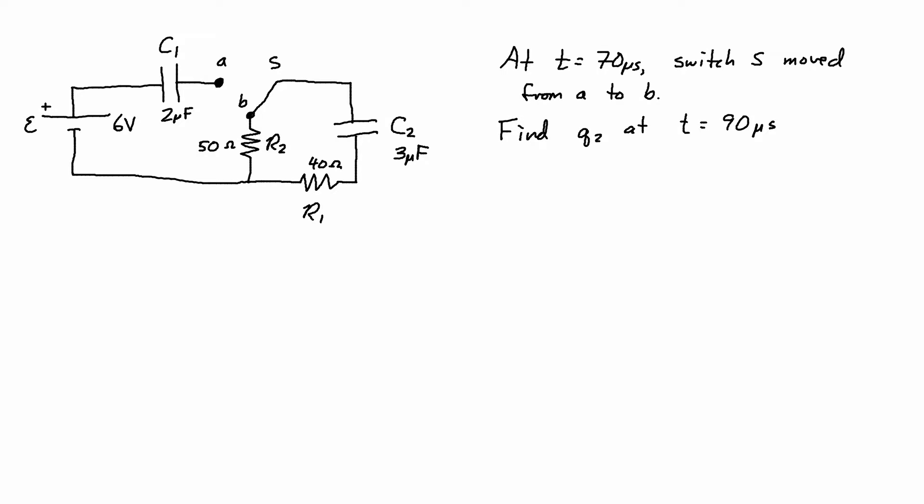In this case the current actually is going to flow. Now remember we had the positive plate on top and we had the negative plate on the bottom for C2. The current will actually be flowing through the resistors counterclockwise and the capacitor is going to be discharging.